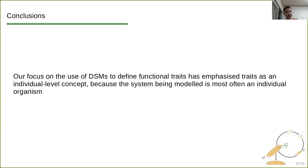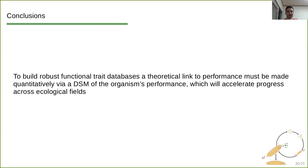Also, they restrict the key ingredients that we need to model population dynamics, model population growth, that we basically don't need to make any additional assumptions when jumping from individual scale to population scale. And finally, to build robust functional trait databases, we need this theoretical link to performance via dynamical systems models. And if we keep in mind this link, and if we follow the scheme that this sort of perspective gives us, then we can build robust functional trait databases, which will accelerate progress across, we think, a number of ecological fields.